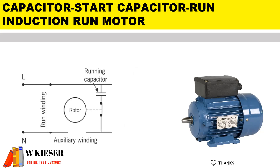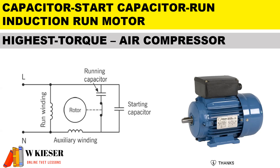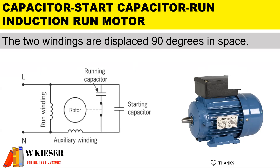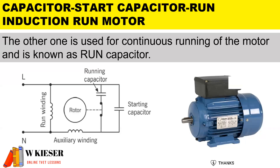This motor is known as the capacitor start capacitor run induction motor. Looking at the circuit diagram, you'll notice the run winding, the auxiliary winding, a run capacitor, and a start capacitor. It is mainly used as an air compressor and has the highest torque. The motor has a cage rotor and its stator has two windings — the main and auxiliary winding — displaced 90 degrees in space. One capacitor is used at starting, known as the starting capacitor, and the other is used for continuous running, known as the run capacitor.